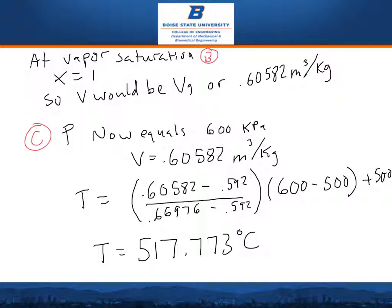Next, the pressure now equals 600 kilopascals and the specific volume equals 0.60582 meters cubed per kilogram. To solve for the temperature, you subtract 0.60582 minus 0.592, which is the saturation level of water.